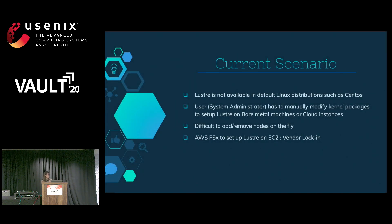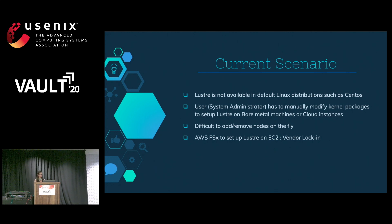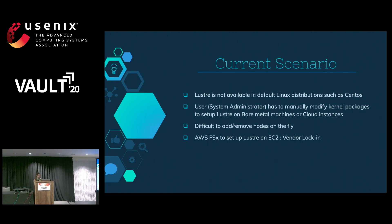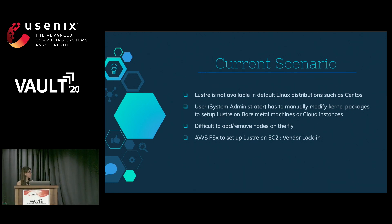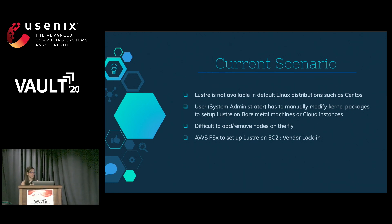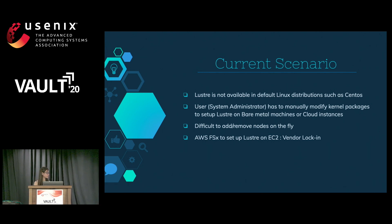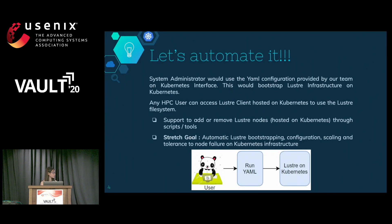Looking at the current scenario: if a system administrator has to set up Lustre, they have to manually modify kernel packages, which is complicated, and it's really difficult to add nodes on the fly. One solution is AWS FSx, but we believe that would result in vendor lock-in. So we decided to automate this process and created some YAML scripts to help set up Lustre automatically on Kubernetes.